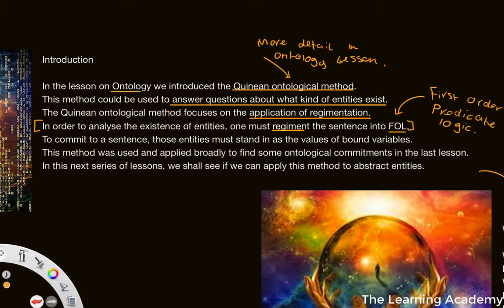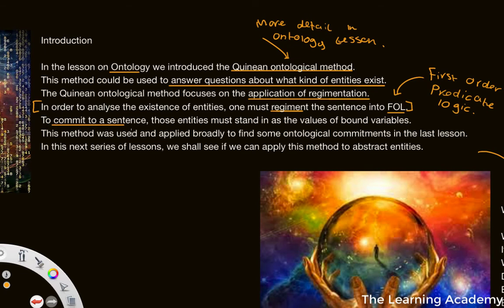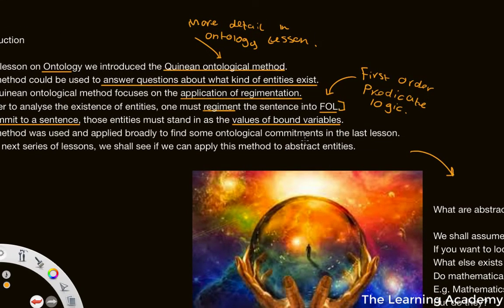This is important as it is really the fundamental starting point when looking at metaphysics in general. You can't really look at other concepts like persistence, causality, philosophy of time, the notion of free will, or the notion of material objects, if we don't have some kind of ontological grounding on which we base our ontological beliefs. So we looked at and analysed the Quinean method, the application of regimentation, and also the method of paraphrase. To commit to a sentence using regimentation, those entities must stand in as values of bound variables.